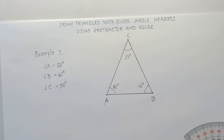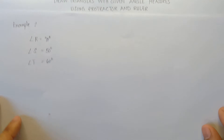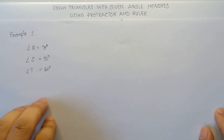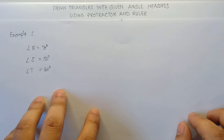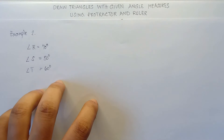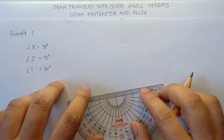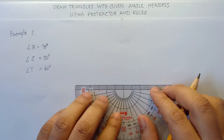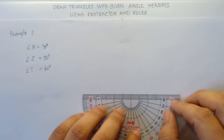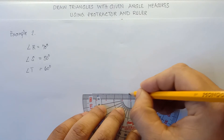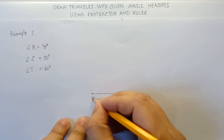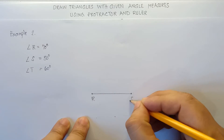Let's have example number two. We have given angle R that is 70 degrees, angle S is 50 degrees, and angle T is 60 degrees. First step: draw a horizontal line without a specific measure, then label this one point R and this one point S.